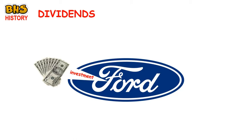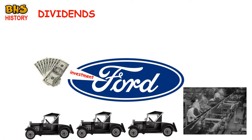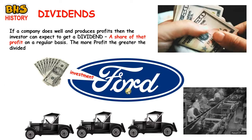So what do investors get? Investors get dividends. As a company expands it makes more profit, and a share of that profit is passed down to its shareholders. Ford in the 1920s was booming — pumping out lots of Model Ts and making a lot of money — meaning shareholders could get a dividend, a share of that profit, on a regular basis. The more profit a company makes, the greater the dividend.